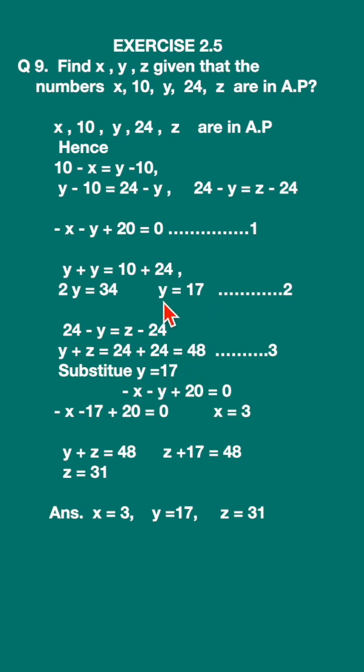Now we got y is equal to 17. Substitute this y is equal to 17 here in the first equation, you will get the value of x as 3. Substitute y is equal to 17 in the third equation: z plus 17 is equal to 48, so z is equal to 31. So you got the values: x is equal to 3, y is equal to 17, z is equal to 31.